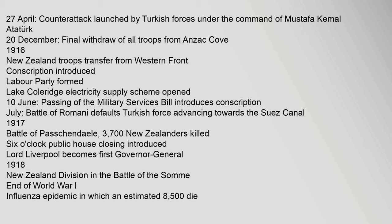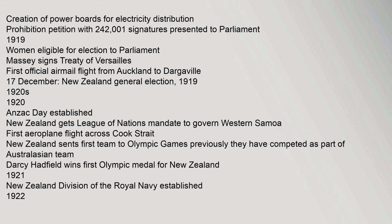July: Battle of Romani defeats Turkish force advancing towards the Suez Canal. 1917: Battle of Passchendaele — 3,700 New Zealanders killed. 6 o'clock public house closing introduced. Lord Liverpool becomes first Governor-General. 1918: New Zealand Division in the Battle of the Somme. End of World War I. Influenza epidemic in which an estimated 8,500 die.